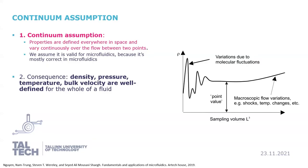The continuum assumption was introduced in the last lecture, but we will look at it again because it proves the validity of what we discuss today. It is an idealization of continuum mechanics under which fluids can be treated as continuous, even though on a microscopic scale they are composed of molecules. It is mostly correct because we stay above the scale where molecular interactions would dominate and cause rapid variations in, for instance, density. On the scale we operate, there are no significant variations between different points in your flow.